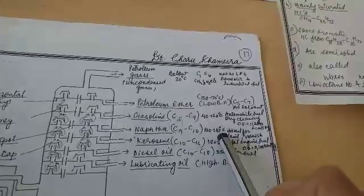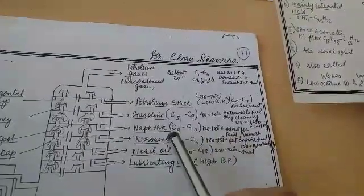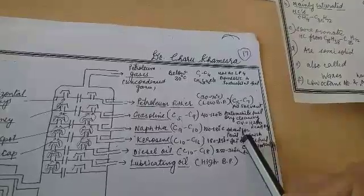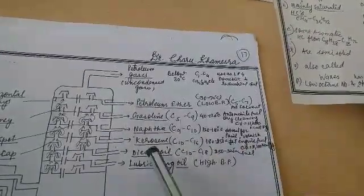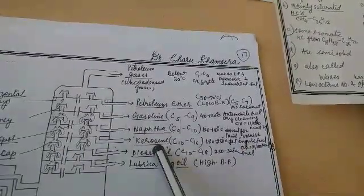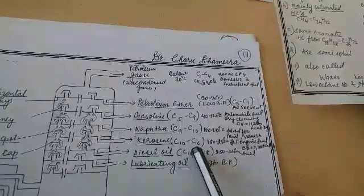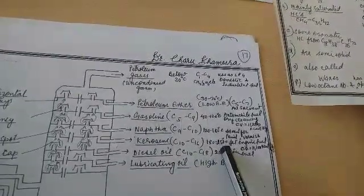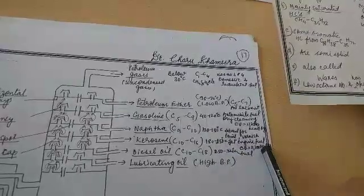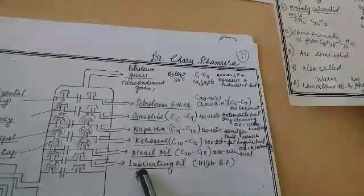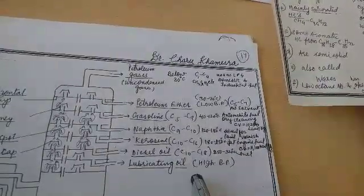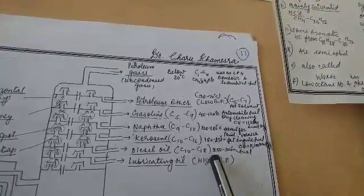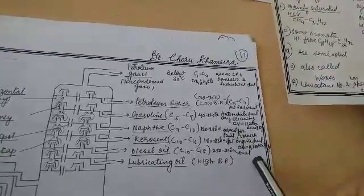The next fraction is naphtha, collected at 120 to 180 degrees centigrade, containing carbon 9 to carbon 19, and used as a solvent for paints and varnishes. The next fraction is kerosene, containing carbon 10 to carbon 16, collected at 180 to 250 degrees centigrade, and used as jet engine fuel. Diesel oil contains carbon 10 to carbon 18 and is collected at 250 to 320 degrees centigrade, used as automobile fuel.